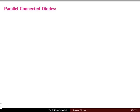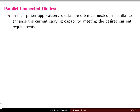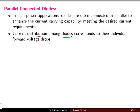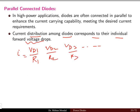Moving on to parallel connected diodes: in high power applications, diodes are often connected in parallel to enhance the current carrying capability. Earlier we addressed high voltage requirements using series connection; now for high current requirements we use parallel connection. When current is distributed among parallel paths, the net current capability increases, so the total current I = I1 + I2 + I3, distributed according to individual forward voltage drops.